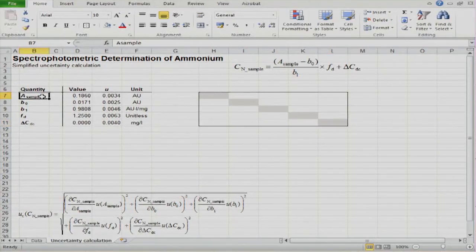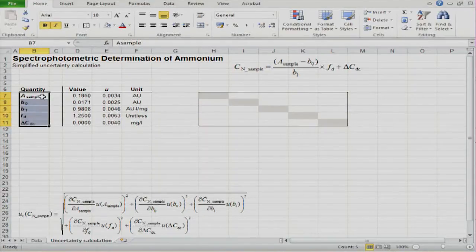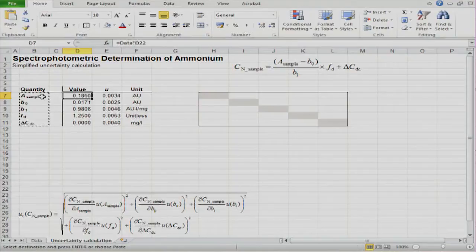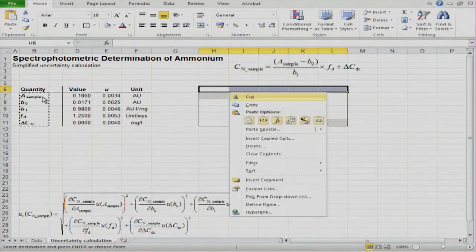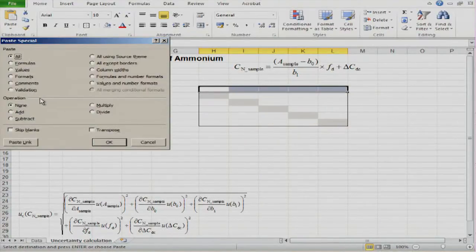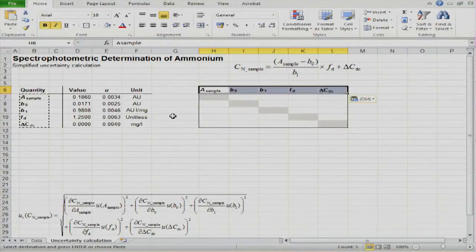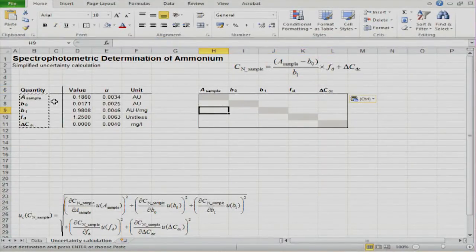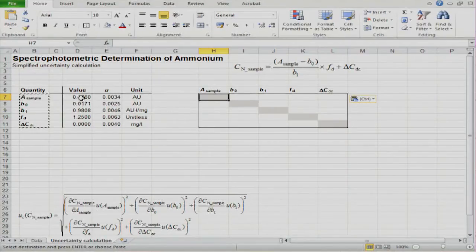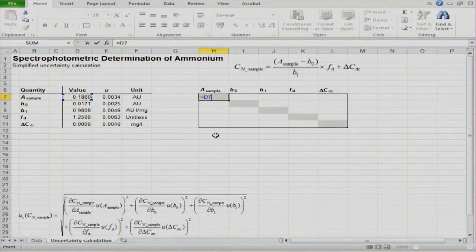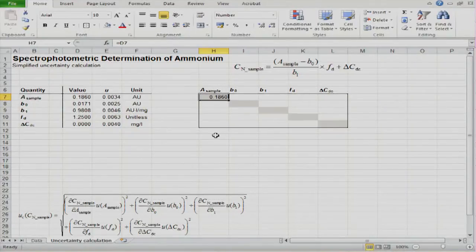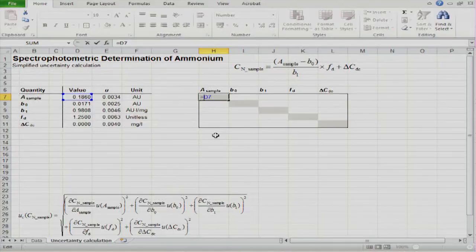Each of the columns in the Kragten matrix corresponds to one of the input quantities. Therefore, it is useful to mark them, and this can be done with copy and with the so-called paste special function, whereby we use the transpose option so that all the quantity names that initially were in a column are now in a row.